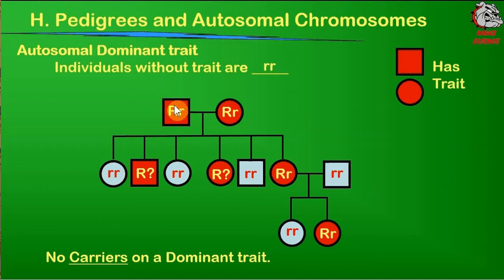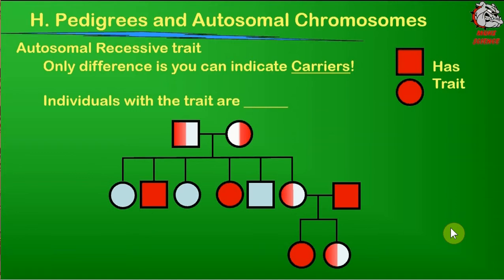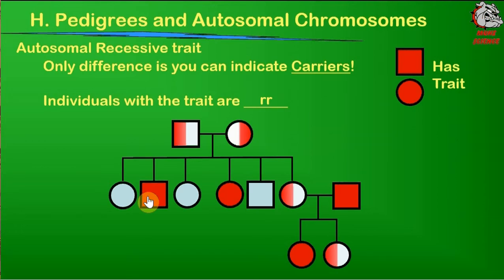This is the dominant trait, where having the dominant allele gives you the trait. Now let's take a look at an autosomal recessive trait. The only difference here is that you can have carriers. In the case of autosomal recessive traits, the individuals with the trait have to have lowercase r, lowercase r — they have to be homozygous recessive. So when you first start solving this, you go through every person that has the trait, because everybody with the trait has to be homozygous recessive.